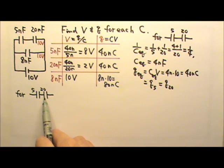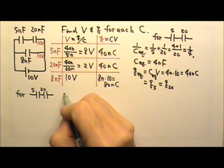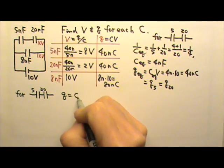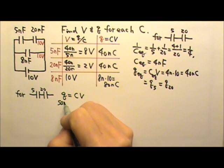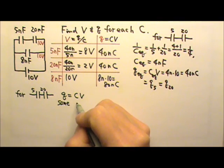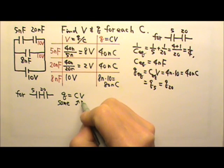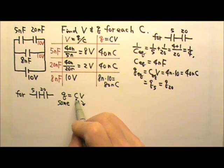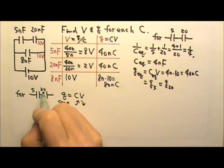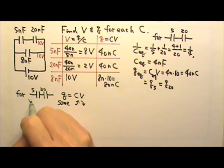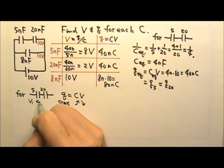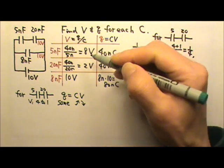For these two in series, they get the same charge. And Q equals CV. If they have the same charge, that means the one with the larger capacitance gets less voltage. And in this particular case, they are exactly inversely proportional to each other. So if the capacitance is 1 to 4, that means they'd be sharing the voltage 4 to 1.